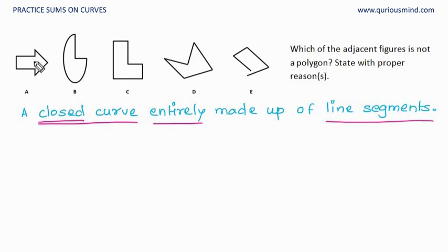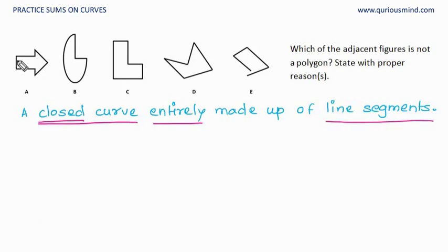So A — is it entirely made up of line segments? Yes. Is it a curve? Yes, it can be drawn without lifting the pencil. And is it a closed curve? Yes — the start point and end point, whichever point we consider, they are the same. So A is a polygon.